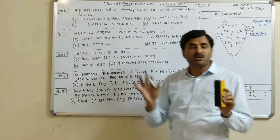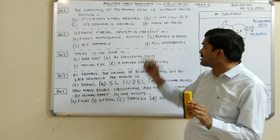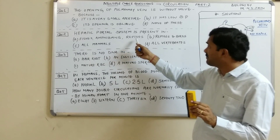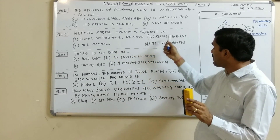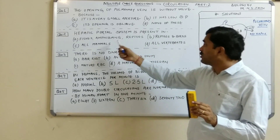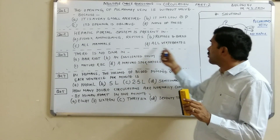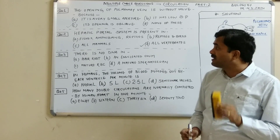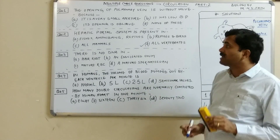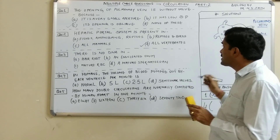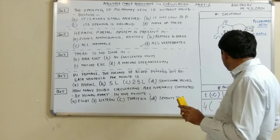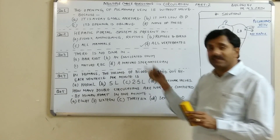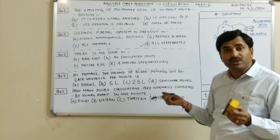The hepatic portal system is a feature of all vertebrates. The options are: fishes, amphibians and reptiles; reptiles and birds; all mammals; or all vertebrates. All vertebrates have the hepatic portal system, so question number two answer is B.